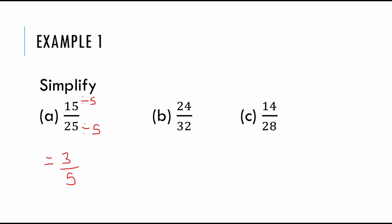Now, twenty-four and thirty-two: the biggest number that goes into both of these is eight, so I divide throughout by eight. Eight goes into twenty-four three times, and thirty-two four times. So, is three over four the simplest form? Yes. For fourteen and twenty, the biggest number that goes into both of these is two. So fourteen divided by two is seven, and twenty divided by two is ten, giving seven over ten.